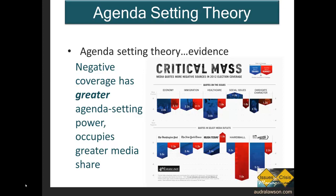If an organization does something great that helps kids, this may or may not get coverage. However, if an organization causes the injury or death of two kids, it's going to be a headline that runs across multiple outlets, probably for multiple days. This infographic talks about the 2012 US presidential election, where across most major outlets, negative stories got far more coverage about both candidates compared to positive stories or even just neutral or informational stories.